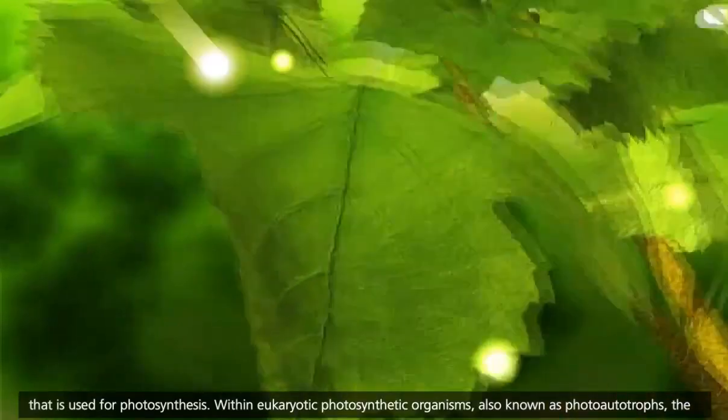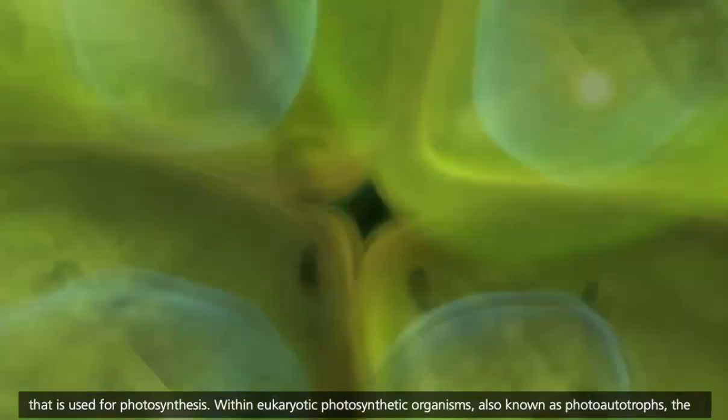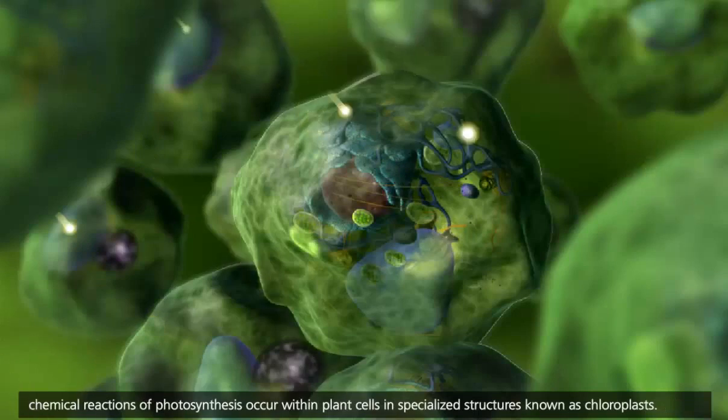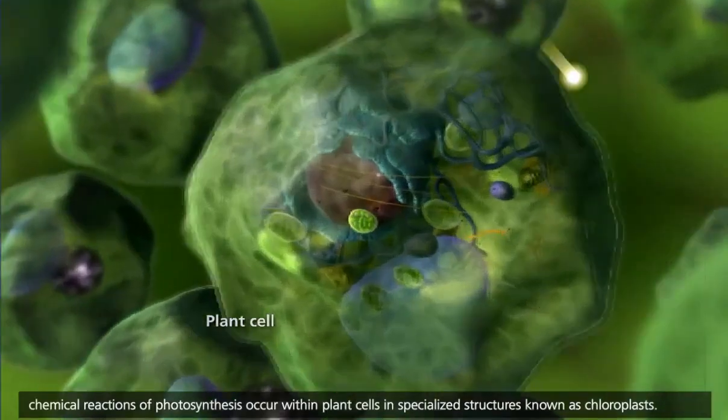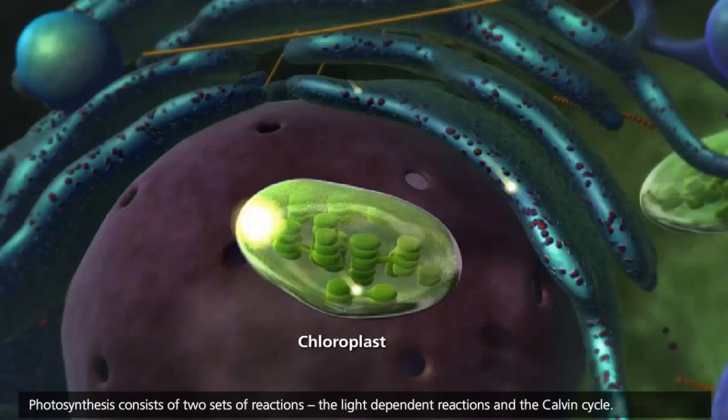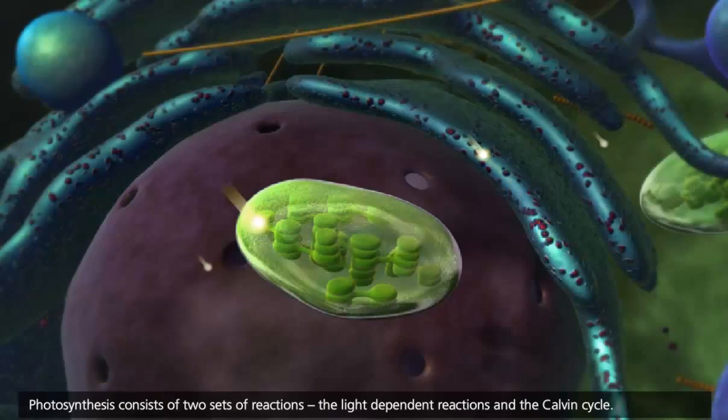Within eukaryotic photosynthetic organisms, also known as photoautotrophs, the chemical reactions of photosynthesis occur within plant cells in specialized structures known as chloroplasts. Photosynthesis consists of two sets of reactions, the light-dependent reactions and the Calvin cycle.